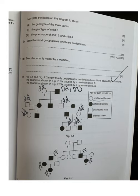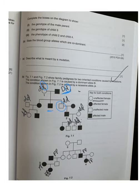Working out the genotypes in 7.1: if a child has small d small d, then the parents must be heterozygous. This confirms those parents are heterozygous. Following through the pedigree, if a parent is heterozygous and affected, their parent must also be heterozygous. All individuals who produce a small d small d child are confirmed heterozygous.